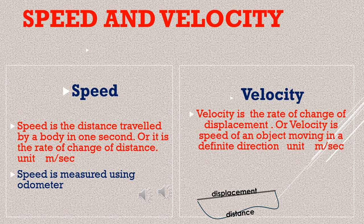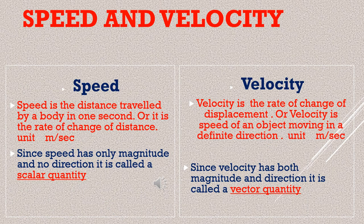The unit of velocity is the same as that of speed. On differentiating speed and velocity: speed is the distance travelled in one second, or the rate of change of distance, with unit meter per second. Velocity is the speed of an object moving in a definite direction — its unit is again meter per second. Speed has only magnitude and no direction, so it is a scalar quantity. Whereas velocity has both magnitude and direction, so it is a vector quantity.